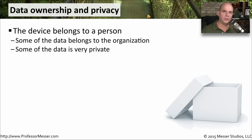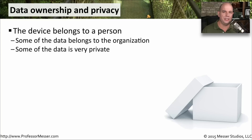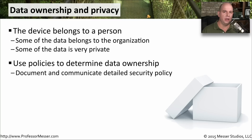Our mobile phones and tablets are very personal devices, generally used by one person, and the information on these devices can be very personal and private. So we need to set a clear delineation over who owns the data and who has access to the data on that mobile device. Some of the data is going to belong to the organization, but some is also going to belong to the individual. Because of these differences in data types and ownership, you have to set up clear policies on how you handle that data when someone is brought onto the network and when somebody leaves the network.